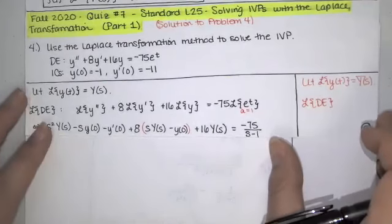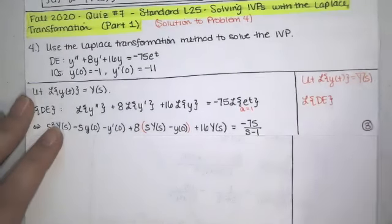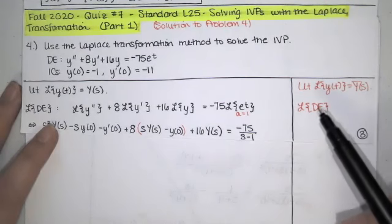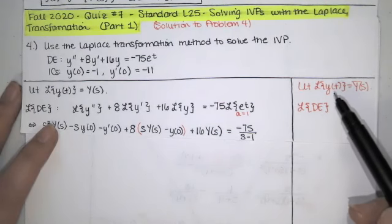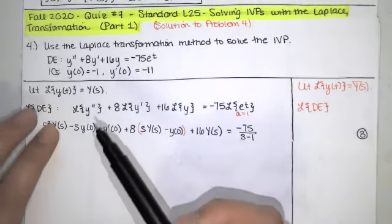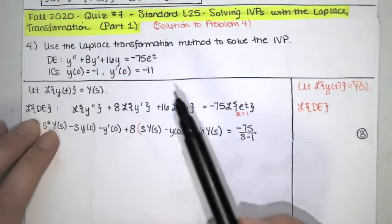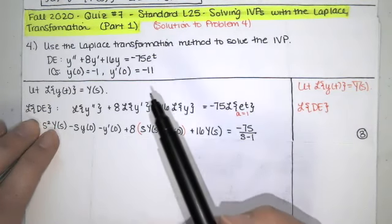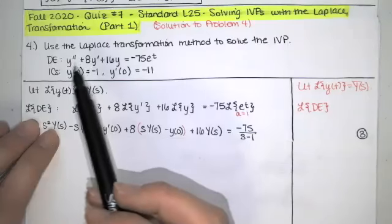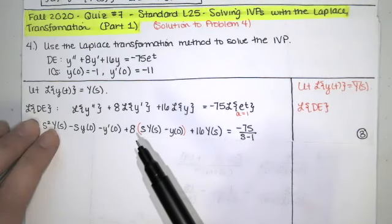We start this the same way we start every other problem. We introduce our notation: we let the Laplace transform of little y equal big Y, so everybody knows what big Y of s represents. Then we take the Laplace transform of both sides of the differential equation and set those equal to each other.